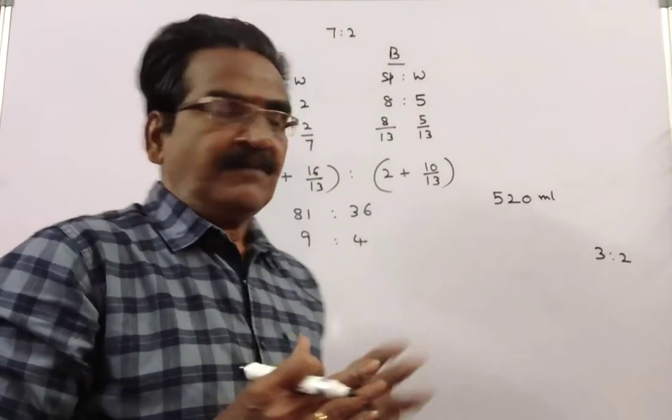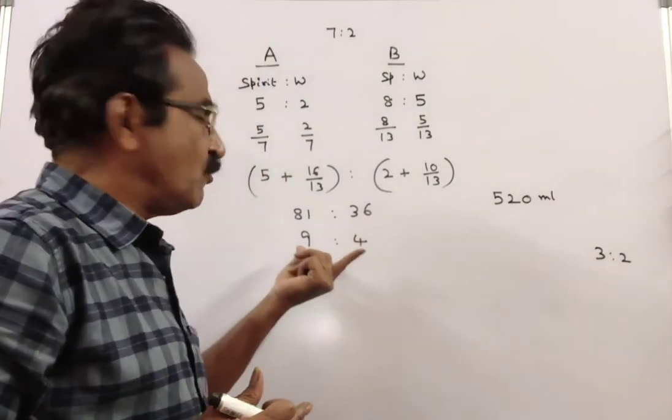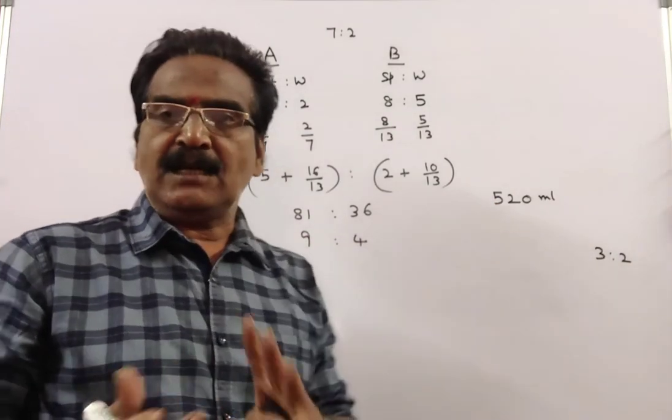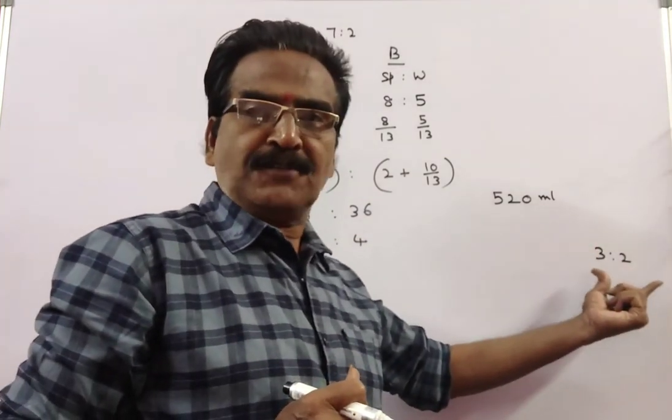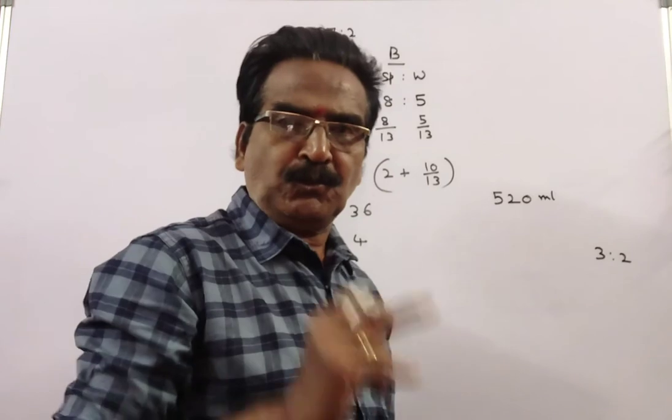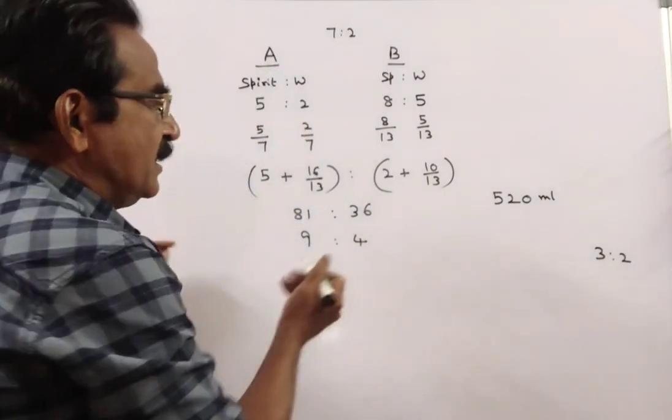Now, 520 ml of this solution is taken and how much water should be added to make the ratio of spirit and water 3 is to 2 in the resultant solution.